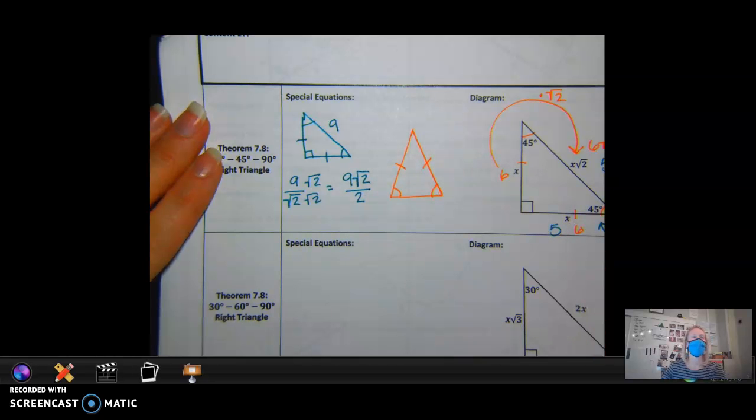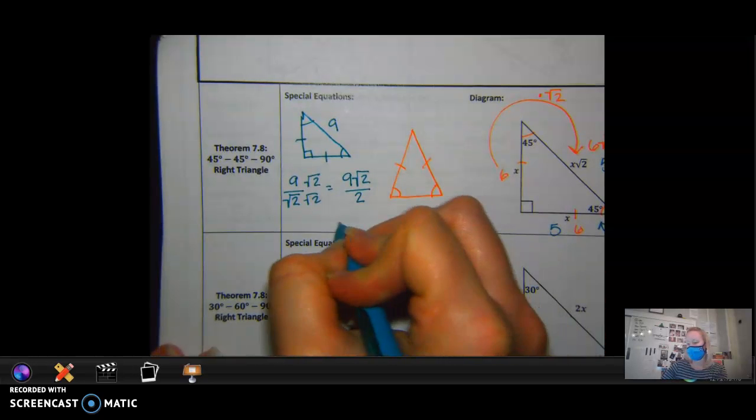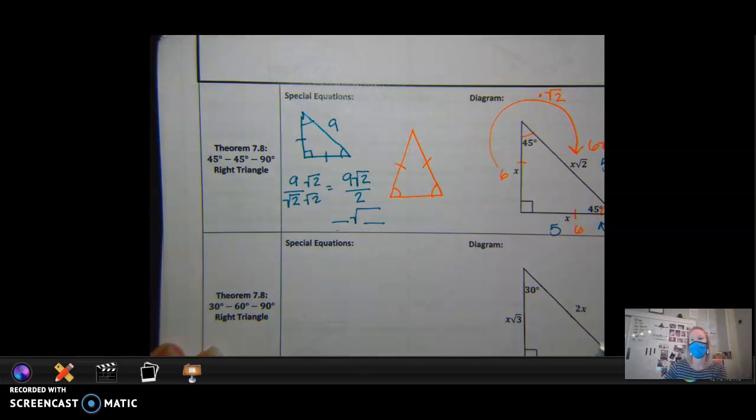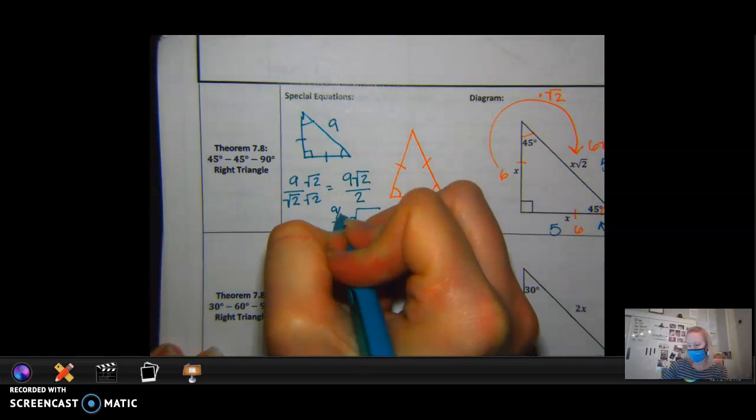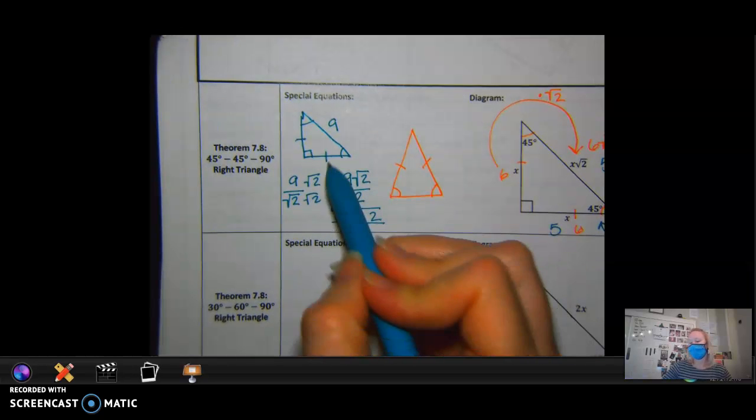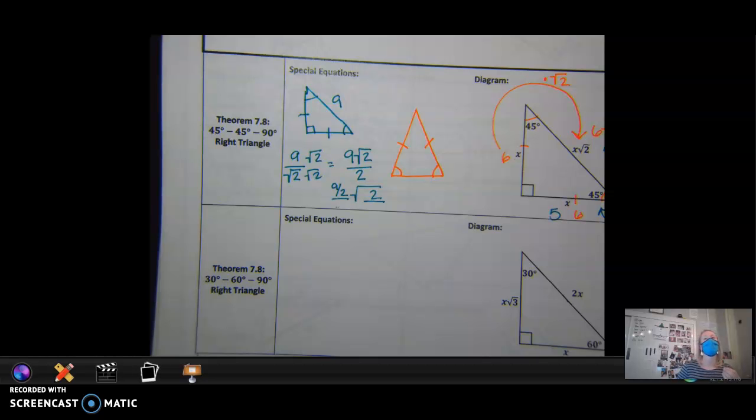Does 9 over 2 reduce to a whole number? No. But if they told you this in Schoology, what would you put in the first blank? Yeah. And the second blank would just get that 2, right? So if this is 9 square root of 2 over 2, that's the same for this leg also. So I've given you one leg, you found the other two. So that's how you do a 45, 45, 90.